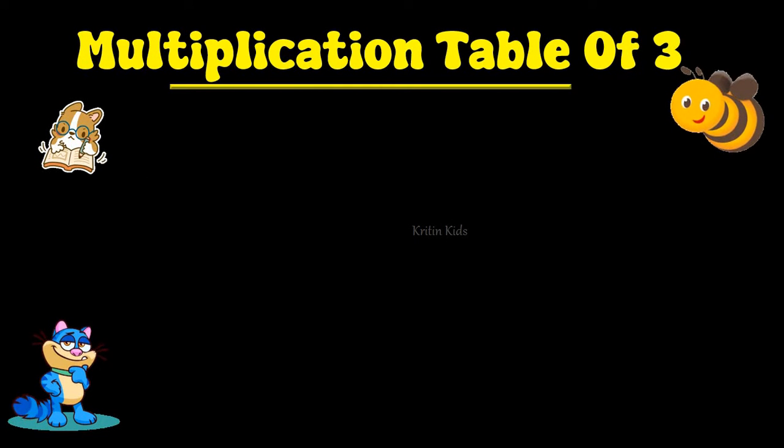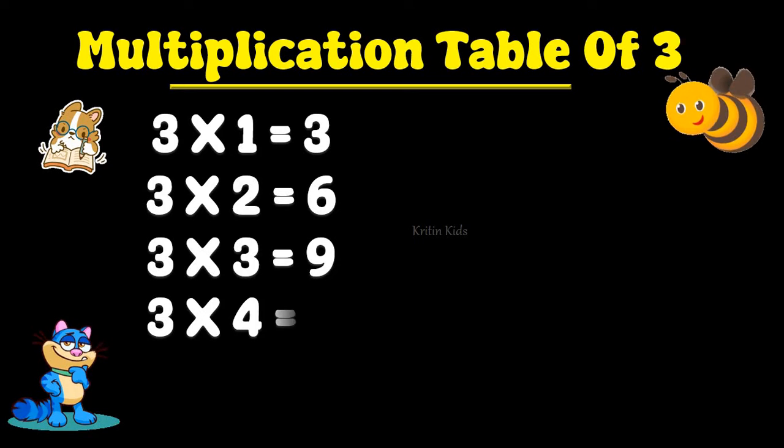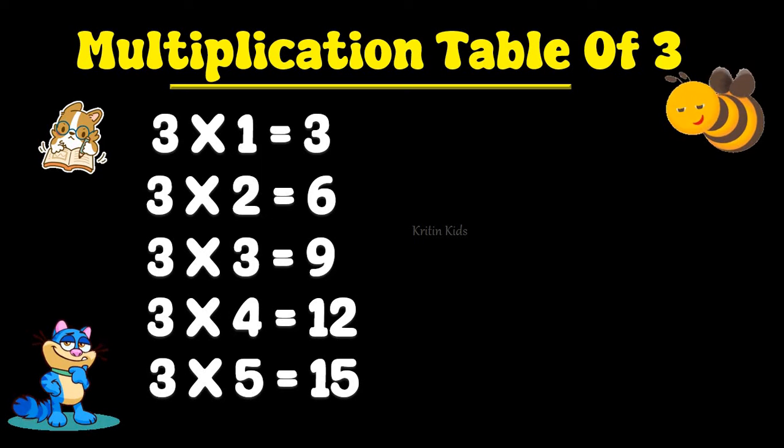Multiplication Table of 3. 3 1s are 3, 3 2s are 6. 3 3s are 9, 3 4s are 12, 3 5s are 15.